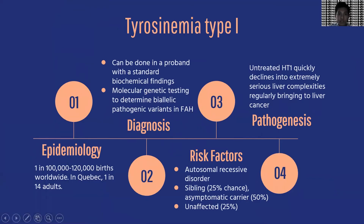Tyrosinemia is a disease caused by the lack of fumarylacetoacetate hydrolase (FAH) enzyme. It has been estimated to affect one in 100,000 to 120,000 births worldwide. Diagnosis can be done through standard biochemical findings and/or molecular genetic testing to determine biallelic pathogenic variants in FAH. There have been approximately 35 mutations described for tyrosinemia type 1.